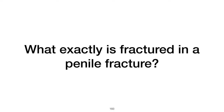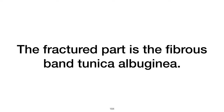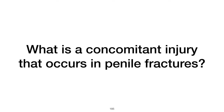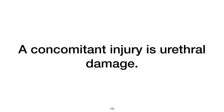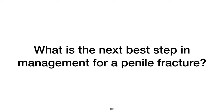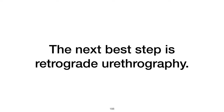What exactly is fractured in a penile fracture? In a penile fracture, the fibrous band known as the tunica albuginea is fractured. A concomitant injury that can occur is urethral damage. The next best step in managing a suspected penile fracture is retrograde urethrography to assess for urethral injury.